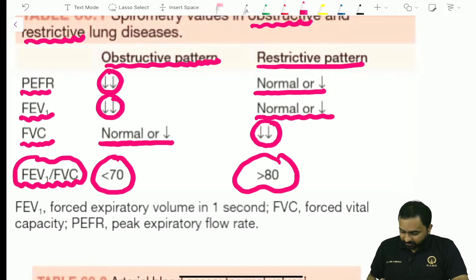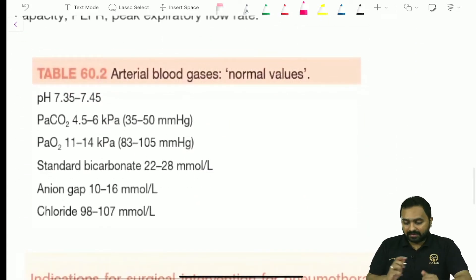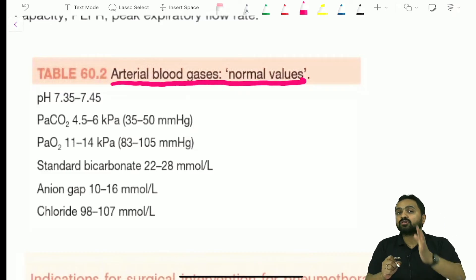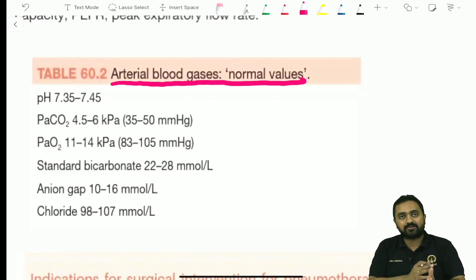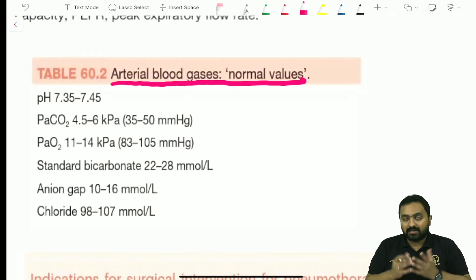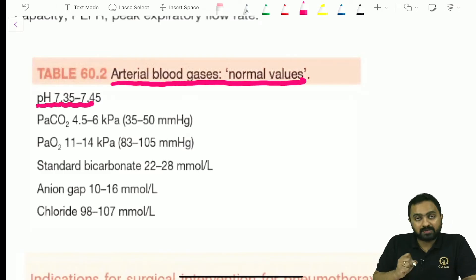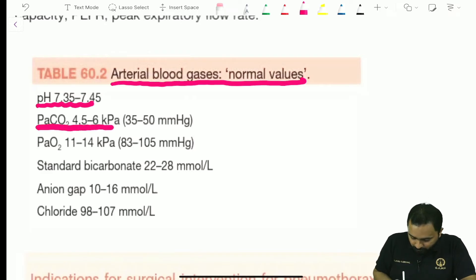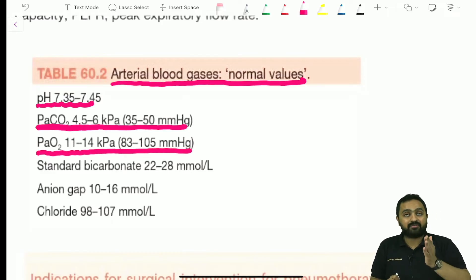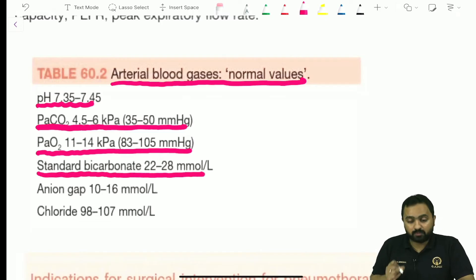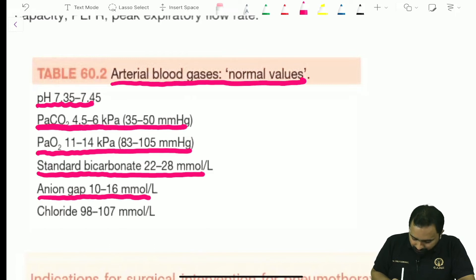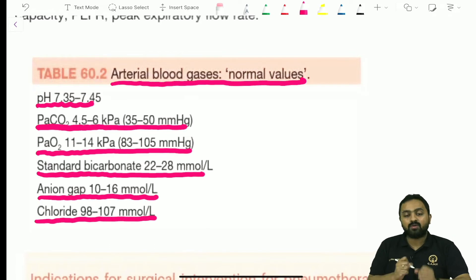Regarding arterial blood gases, the normal values are: pH 7.35–7.45; PaCO2 4.5–6 kilopascal or 35–50 mmHg; PaO2 11–14 kilopascal or 83–105 mmHg; standard bicarbonate 20–28 mmol/L; anion gap 10–16; and chloride 98–107. Please do not forget these basic values while mastering the various acid-base disorders.